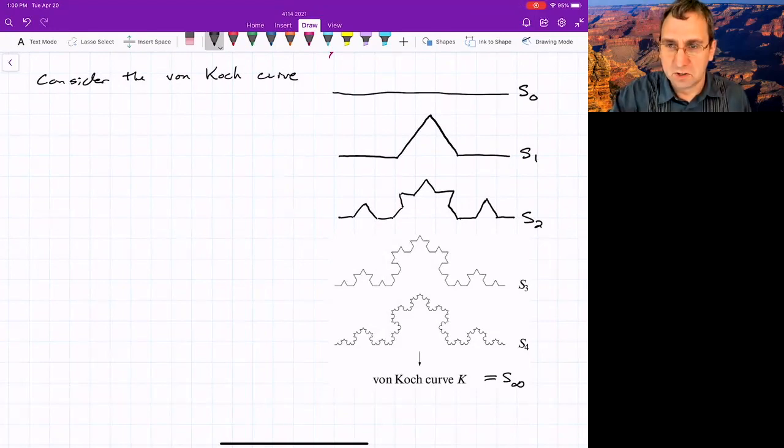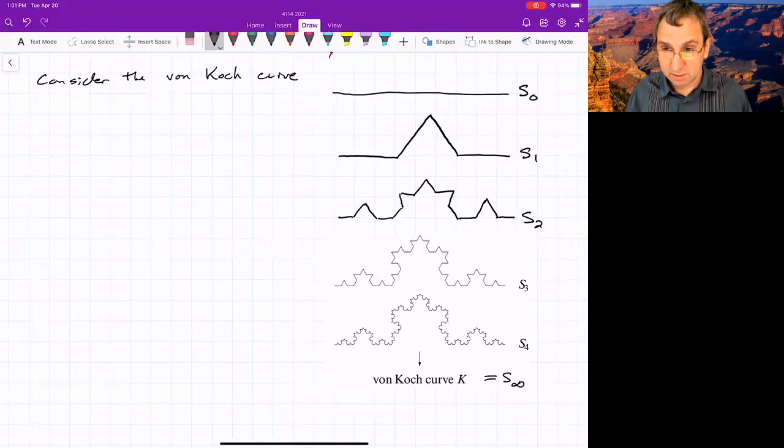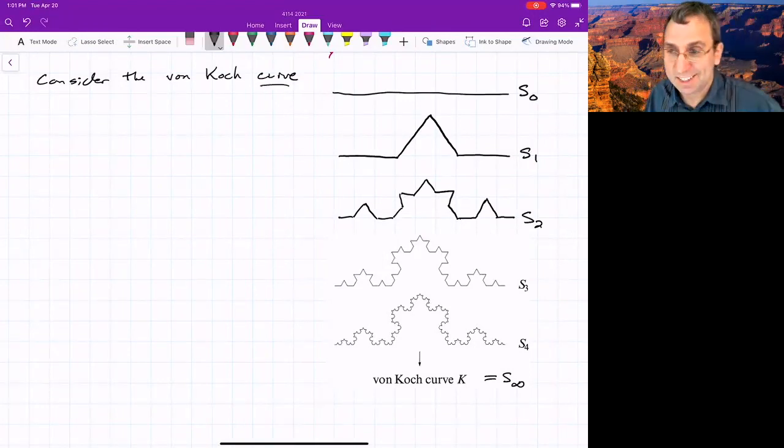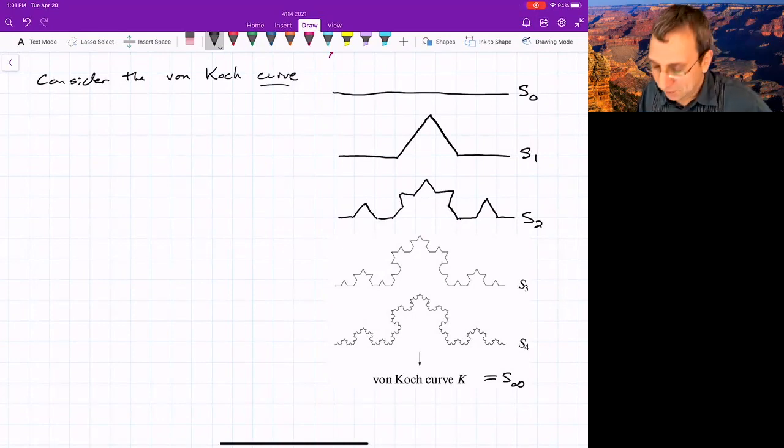And it's got some interesting properties. What is the dimension of this curve, the final curve that you get at the end? Well, we're calling it a curve. So you might think, since it's a curve, it's one-dimensional. But the trouble is, it has infinite arc length.